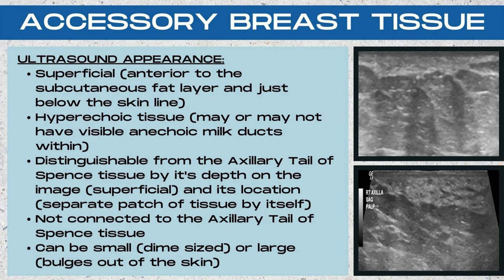The ultrasound appearance of accessory breast tissue is a hyperechoic patch of tissue. It may or may not have visible anechoic milk ducts within it. It's going to be located very superficially on the ultrasound image, just below the skin line and anterior to the subcutaneous fat layer. It's distinguishable from the axillary tail of Spence tissue by its depth on the image — it's more superficial — and also by its location, as it's a separate patch of tissue not connected to the upper outer quadrant breast tissue.